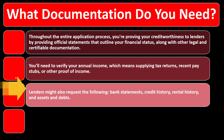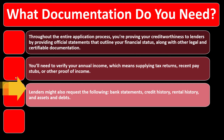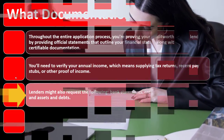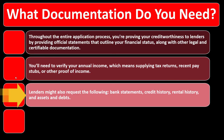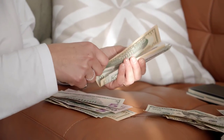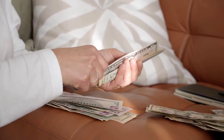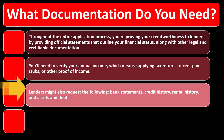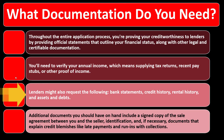Lenders might also request the following: bank statements, credit card history, rental history, and assets and debts. Bank statements can help confirm your spending over recent time frames. Rental history could be significant — it gives them an idea of how steady you are at making payments. Assets and debts means they may also look into your balance sheet information.